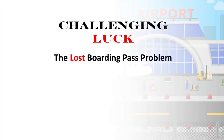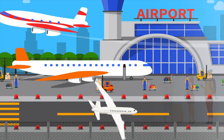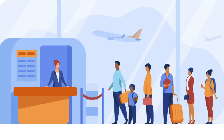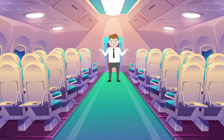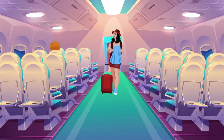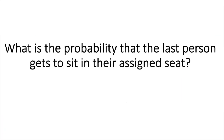The problem goes like this. An airplane has 100 seats and 100 people are lined up to enter the airplane. The first person that goes in has lost their boarding pass, so they just choose a seat at random. Every other person that goes in after them will either sit at their own seat if their seat is open, or if their seat is taken, they will choose a seat at random. The question is: what is the probability that the last person that goes in gets to sit in their assigned seat? If you want to think about the answer, feel free to pause the video.